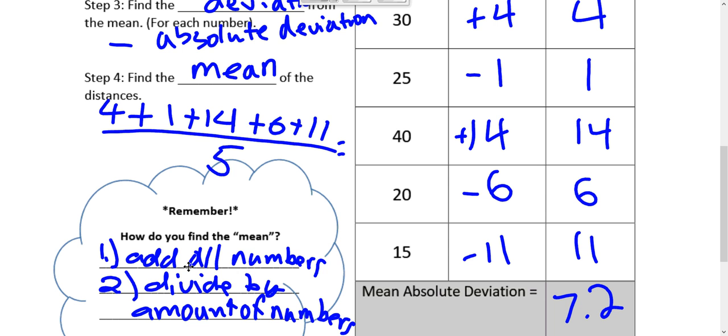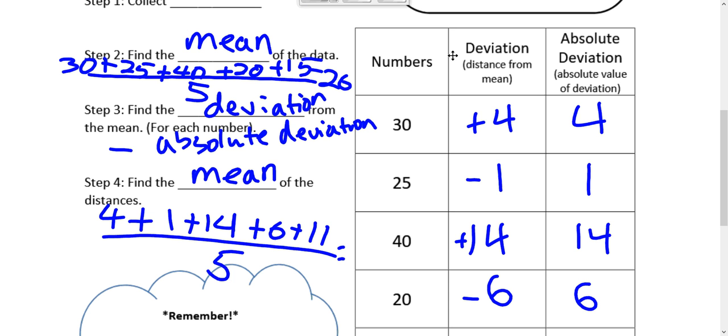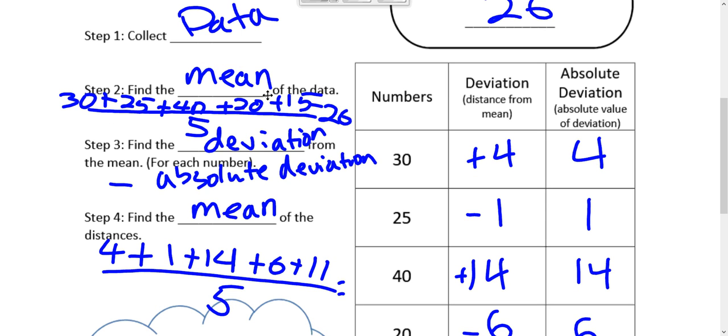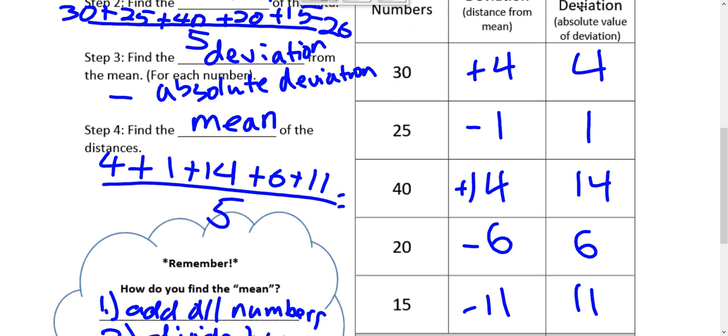So again, remember to find the mean means to add all the numbers and divide by the amount of numbers. So again, find the mean. After you have your data, find the mean. And then find the deviation or the distance away. And then you find the average of that.